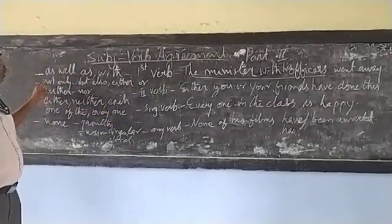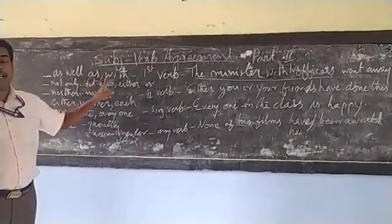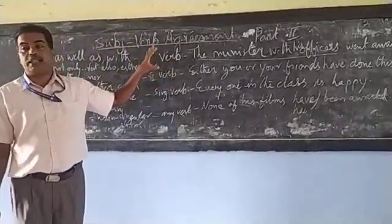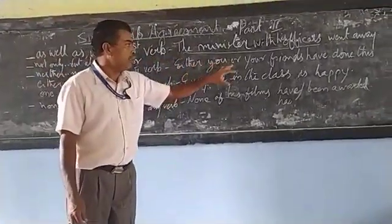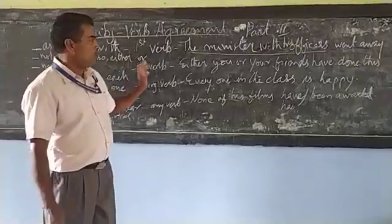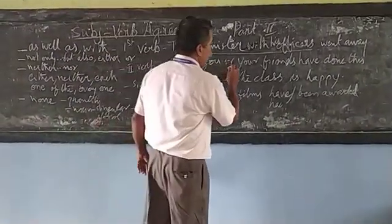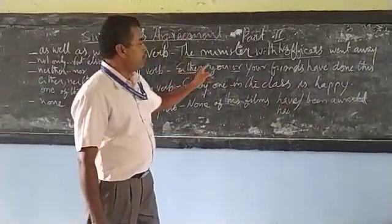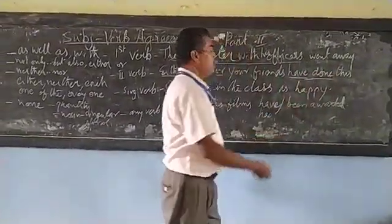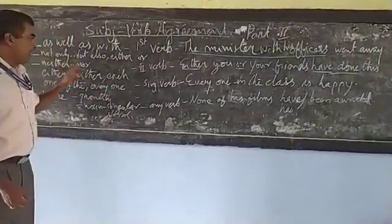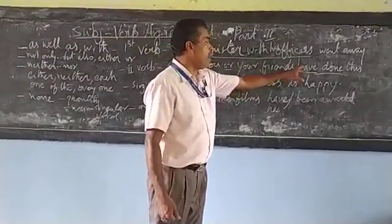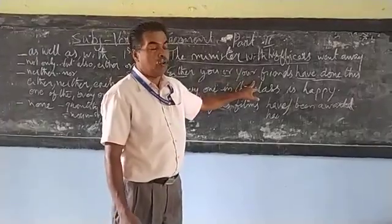Next, suppose you have 'not only but also,' 'either or,' or 'neither nor' — and they become part of your subject. Then the verb will be according to the second subject. Look here: 'Either you or your friends' — here it is plural, so you use 'have done.' When you use 'either or,' 'neither nor,' or 'not only but also' as part of your subject, the verb will be according to the second noun or pronoun used in that subject.